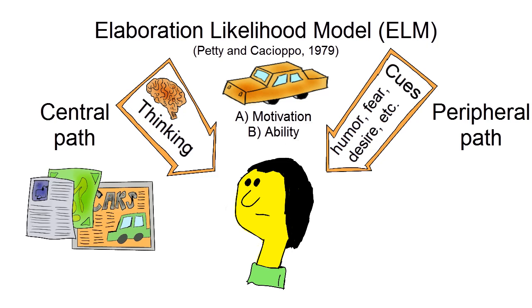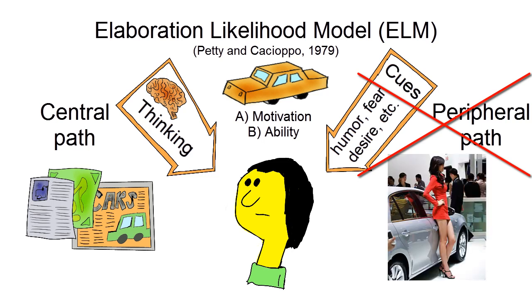Because Tom is both motivated and able, the central route of persuasion will probably yield the best persuasive result. Having sexy models on the hood of a car will less likely persuade him.